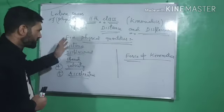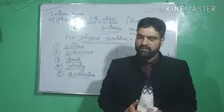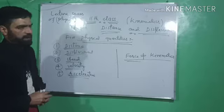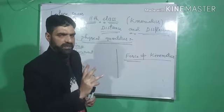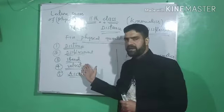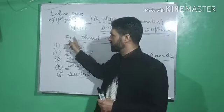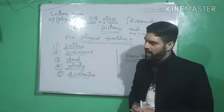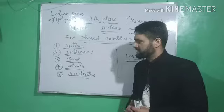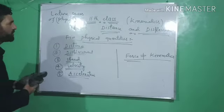Kinematics revolves around five main quantities. Among these, the two most fundamental are distance and displacement. The five quantities around which kinematics revolves are: distance, displacement, speed, velocity, and acceleration. The whole chapter of kinematics is based on these five physical quantities. Today I am going to start with distance and displacement.